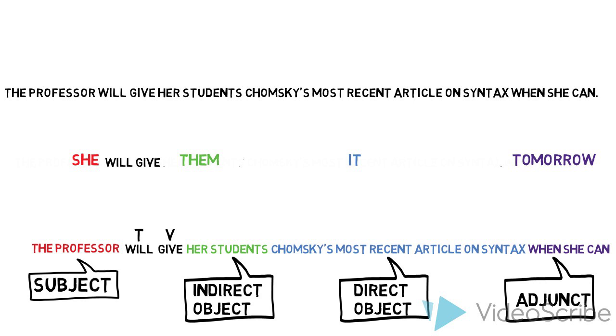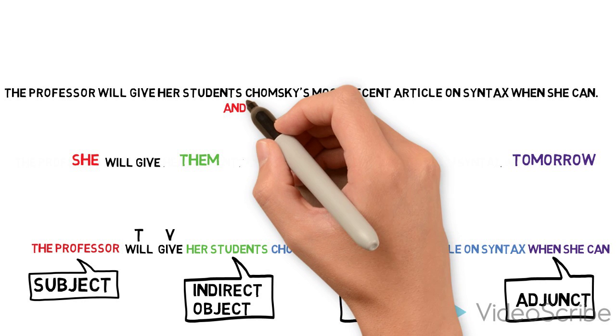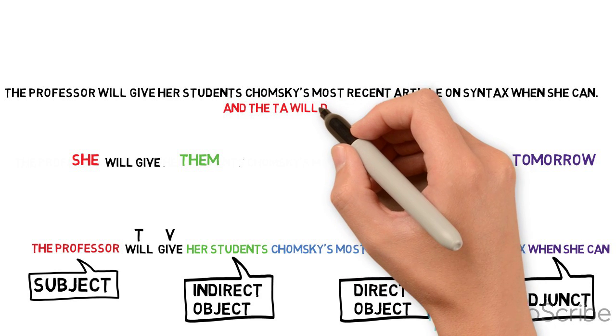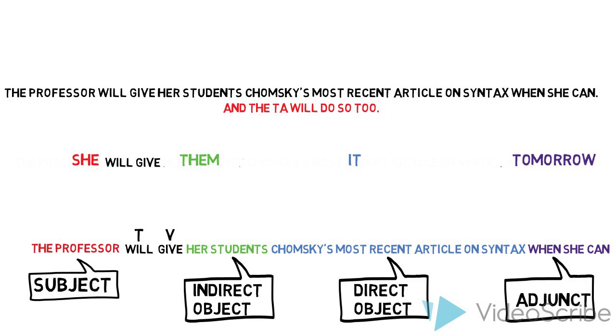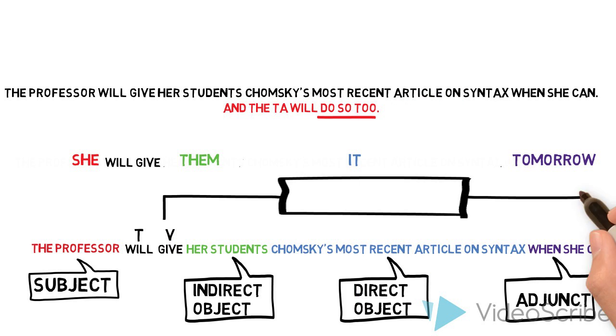The next question is where exactly the adjunct attaches. Is it to VP or to TP? We know that it is part of the VP because we can replace the entire VP by do so, as in and the TA will do so too. This suggests that the adjunct is still part of VP including the other two objects.